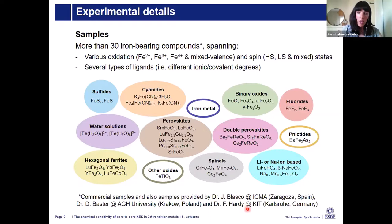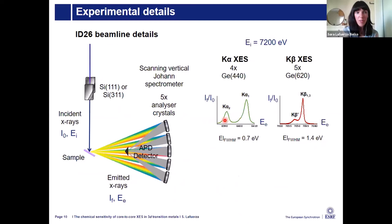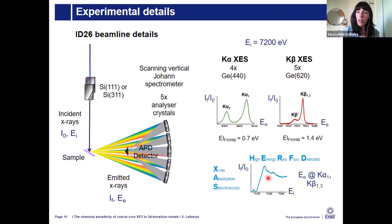The experiment was done at ID26 beamline. An important point is that all the compounds were measured in the same experimental run, which is critical for comparing energy calibrations. We had two experimental sessions: one spectrometer alignment for K-alpha and another for K-beta, with all compounds measured under the same conditions. We also collected X-ray absorption spectra, mainly to check sample quality and monitor radiation damage, using the monochromator to quickly scan for radiation damage.